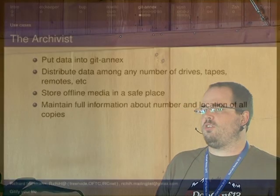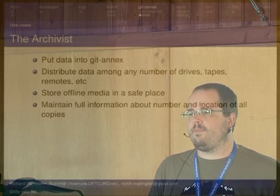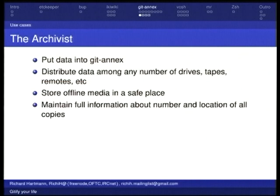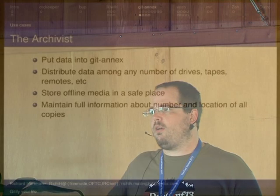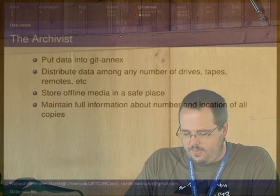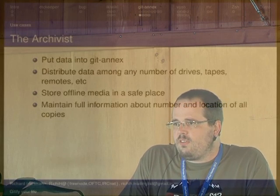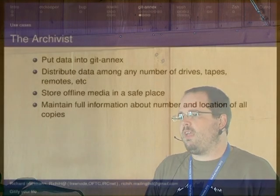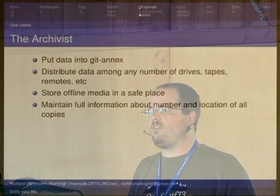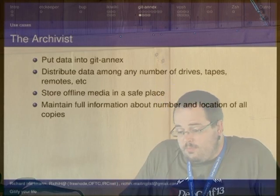First use case: the archivist. What the archivist does is basically collect data either to look at or just to collect. You probably want to have offline disks to store at your mom's or put in a drawer, or you just don't have enough SATA ports in your computer. With git-annex, you can automate all the administrative side of archiving your stuff. Even if you have only one of those disks, if there are proper remotes, you will have full information about all the data in your annex cloud — so even if you pull out one random disk, you'll still have information about all the other disks.